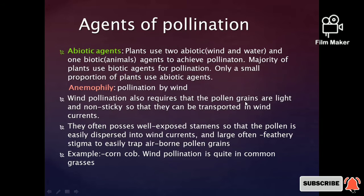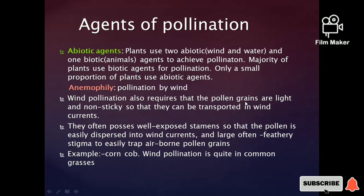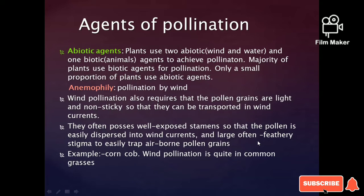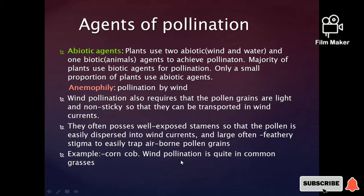Wind pollination, or anemophily, occurs when pollen is carried by wind currents. The pollen grains are light and non-sticky, and the plants often possess well-exposed stamens. The stigmas are often large and feathery to catch light pollen grains easily. Examples include corn and common grasses.